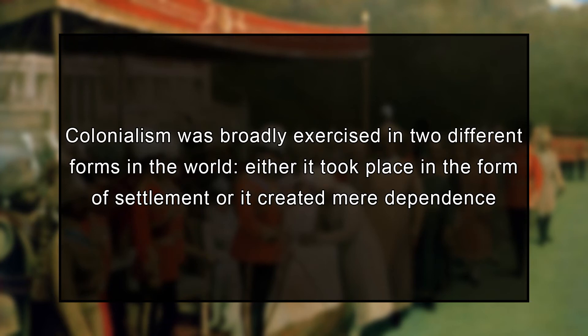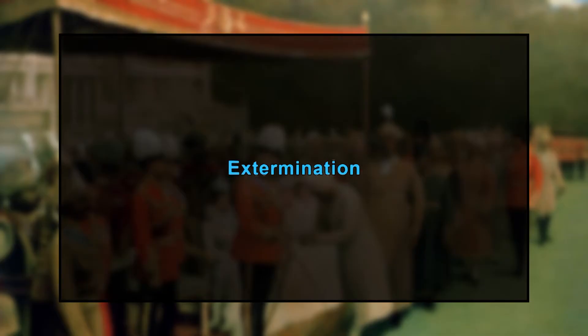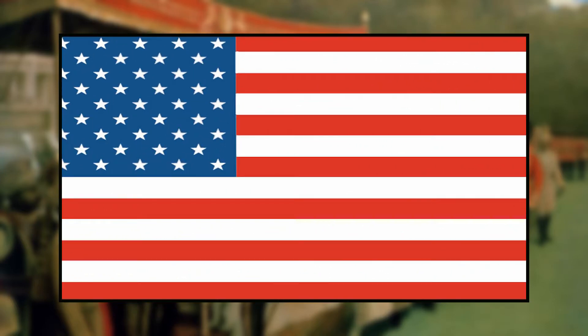Colonialism was broadly exercised in two different forms: either in the form of settlement, or it created mere dependence. These two forms were experienced by the colonized in three different ways — namely extermination, assimilation, and relative equilibrium. In some cases, the dominant relationship between colonizer and colonized led to the extermination of the latter, such as European occupation of Tasmania, some Caribbean islands, and the practical extermination of the native peoples of the United States.